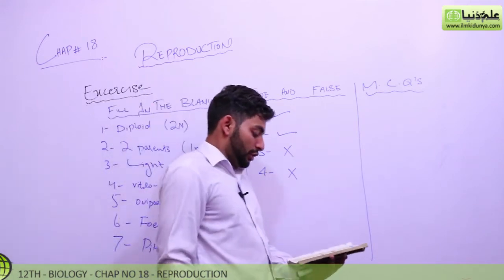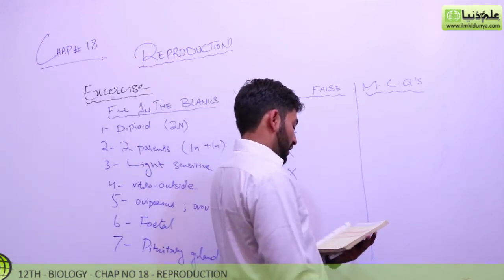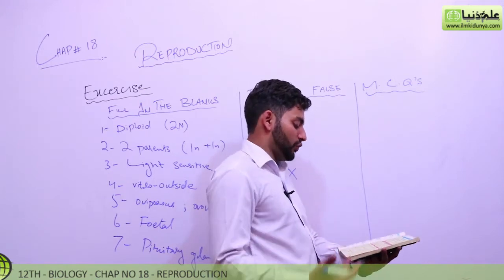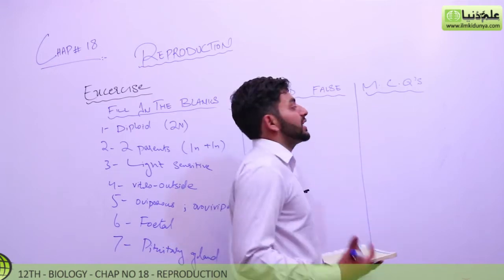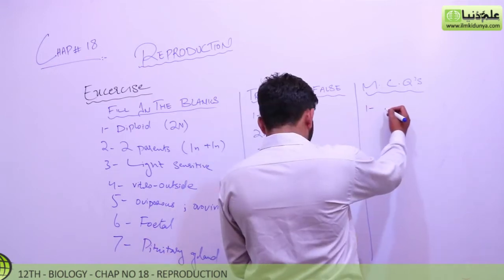In MCQs, you have asked, reproduction is very important for the survival of species, individual, population, or both A and B. So reproduction is very important for species survival. So the answer is A.